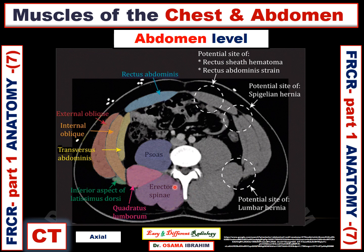Posteriorly there are erector spinal muscles just paralateral to the spinous process, as we will see in detail in the next slides. The other muscle between the psoas and the erector spinal muscle is the quadratus lumborum muscle, which is seen here. This is the quadratus lumborum muscle, psoas muscle, and this muscle is the erector spinal muscle, which is a group of muscles that I will talk about in a separate slide in detail.